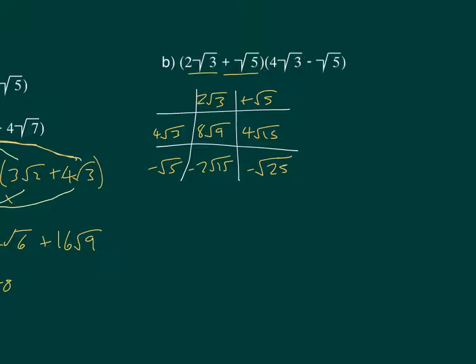So if we simplify all of these. 8 root 9 is 8 times 3, which is 24. 4 root 15 minus 2 root 15 is 2 root 15. And then minus root 25 is minus 5. So we get 2 root 15 plus 19 when we collect the two like terms.